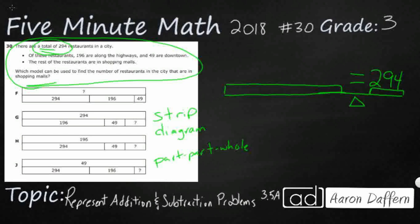So of these restaurants, we've got 196 on the highway, 49 downtown, and then the rest. So there's my unknown. So I've got 294 restaurants. It seems like we're just going to put 196. I can put that kind of in a box here. We're going to put 49 in a box here. And then the rest. So the rest is going to be my unknown, so I'm just going to put a little question mark here.